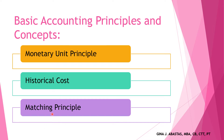Next, we have the matching principle. The cost should be matched with the revenue generated. This principle requires that revenue recorded in a given accounting period should have an equivalent expense recorded in order to show the true profit of the business. For example, the recording of doubtful account expense should be done when the revenue was earned. Another example: advance payment from clients must be recorded in the month when the services were rendered.